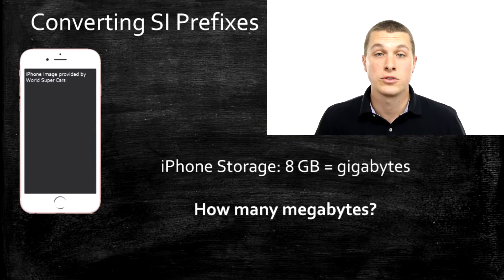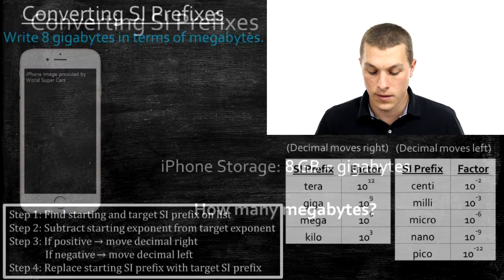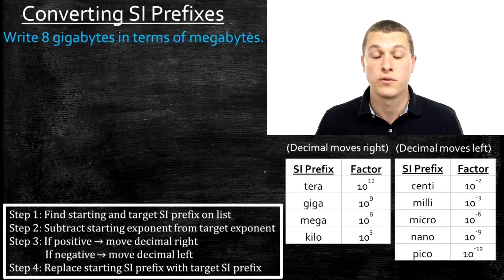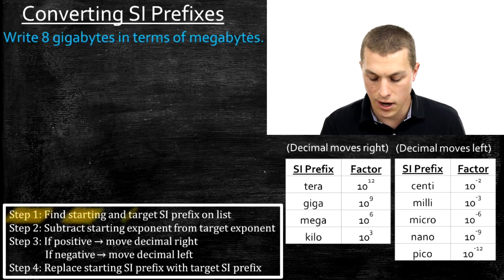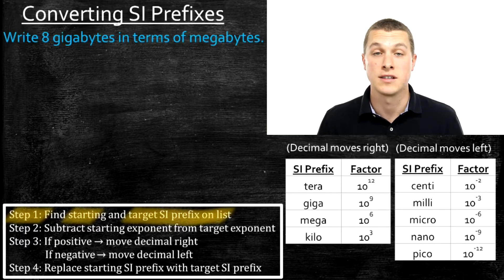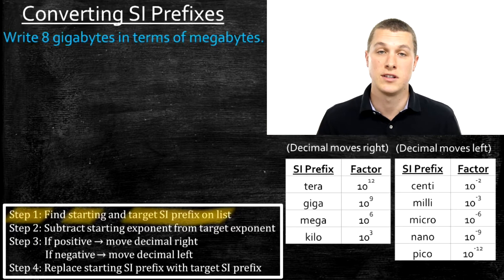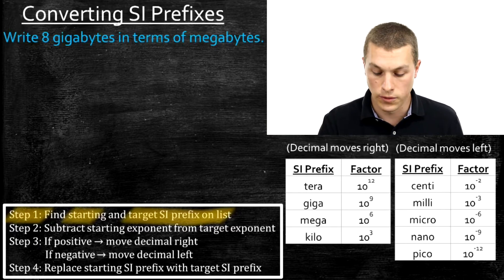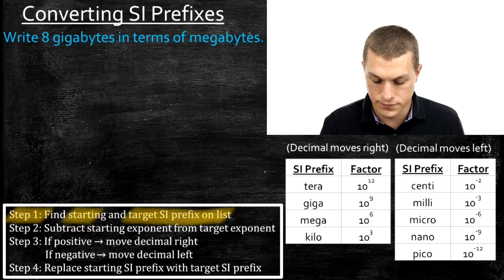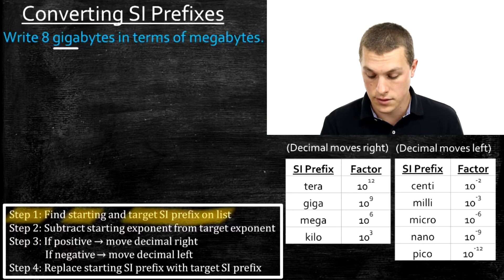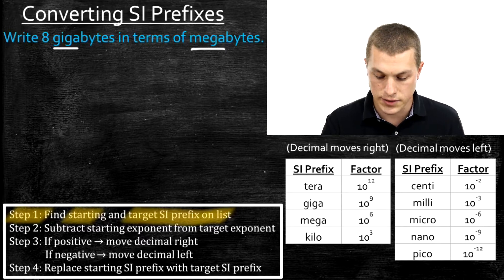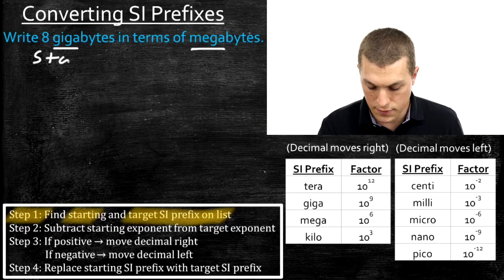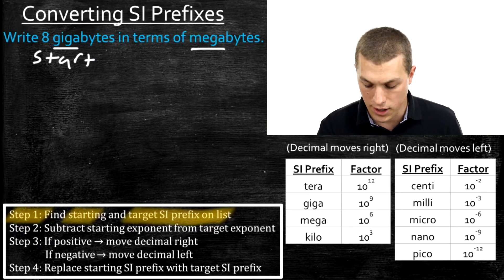So you have your iPhone storage of 8 gigabytes and you want to know how many megabytes that is. I've broken this process down into four steps. In step one, we're going to find our starting and target SI prefix on the list. Our starting is the SI prefix used in the number we begin with, and our target is what we want to get to. Here, giga is our starting SI prefix and mega is our target.